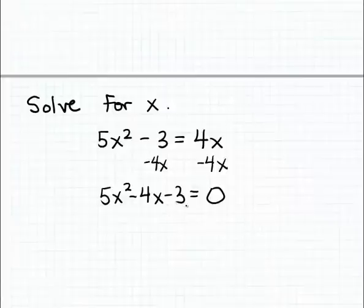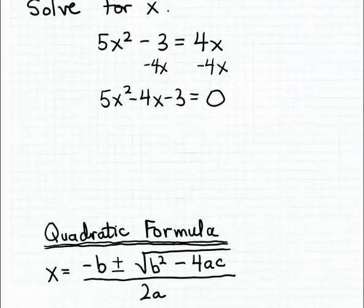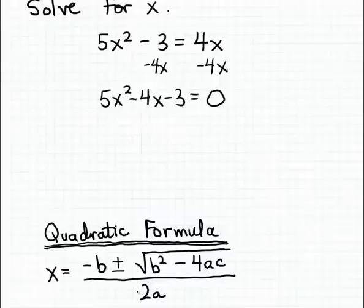We may be able to solve this by factoring the left-hand side and then using the zero factor property — a technique used in other examples. But in this example, I want to use the quadratic formula. The quadratic formula generates the solutions to a quadratic equation, and what's convenient is that all you need to apply it are the coefficients of the terms. The leading coefficient — the coefficient of the unknown squared term — is usually labeled a.